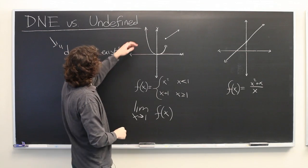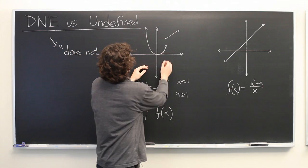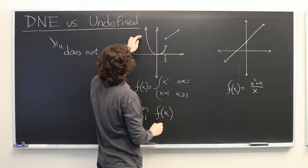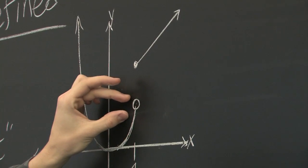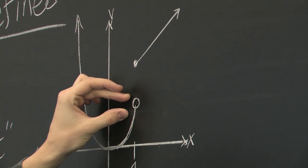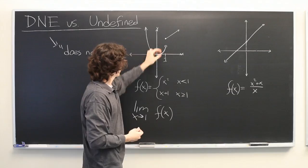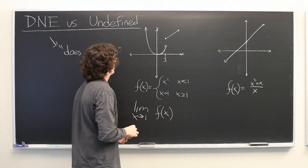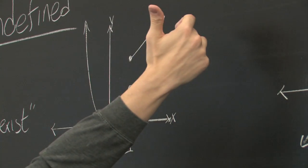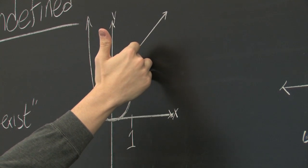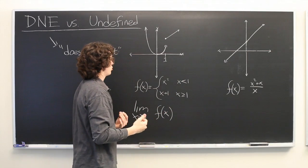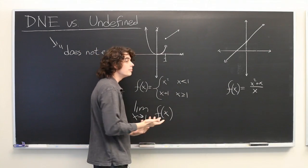Well, if we approach x equals 1 from the left, this limit appears as though it's going towards 1 since 1 squared is 1. But if we approach that from the right, the limit appears as though it's going towards 2 since 1 plus 1 is 2.